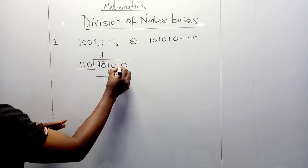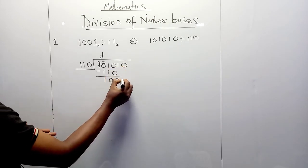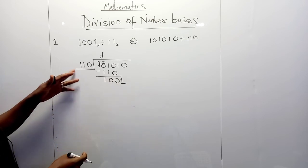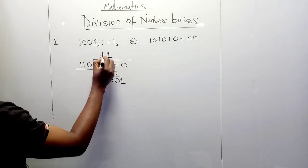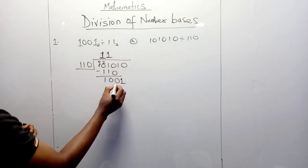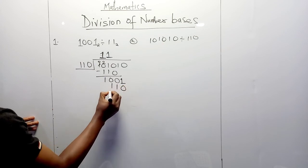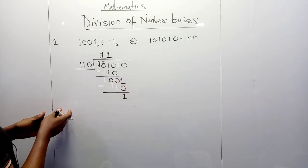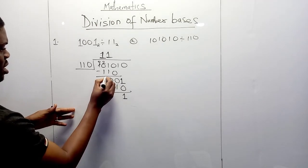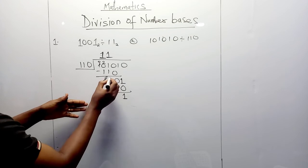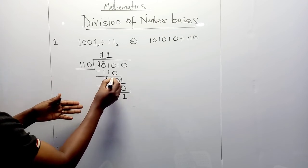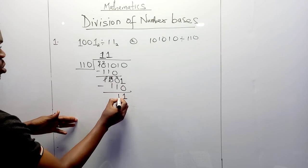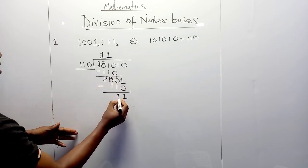We move the next digit down, giving us 1001 divided by 110. We write 1 and multiply: 1 times 110 gives 110. We subtract: 1 minus 0 is 1. Then 0 minus 1 is not possible, so we borrow — that position becomes 0, the borrowed 1 becomes 2, giving 2 minus 1 is 1. We borrow again for the next position: it becomes 1, and 2 minus 1 is 1, then 1 minus 1 is 0. We're left with 11.